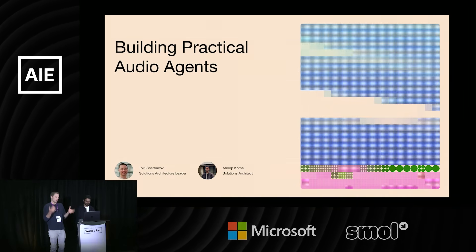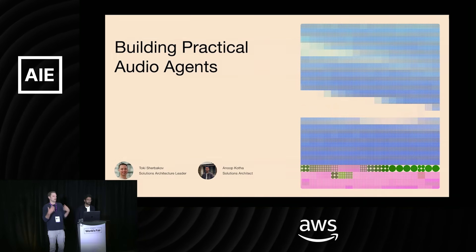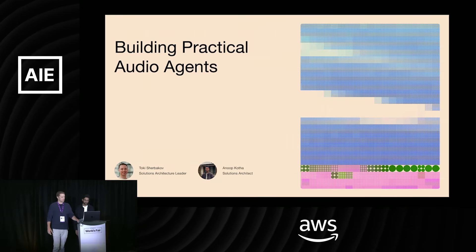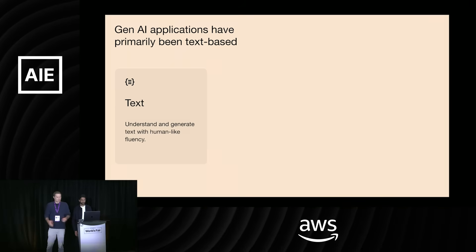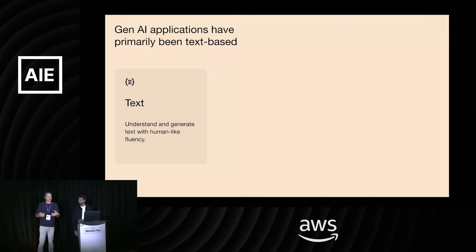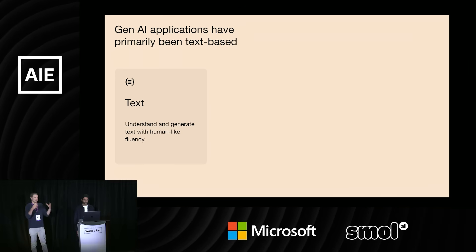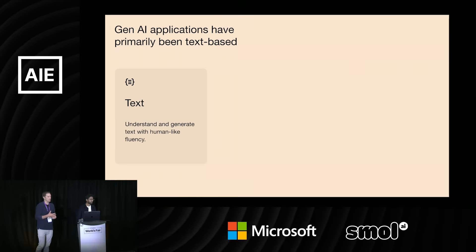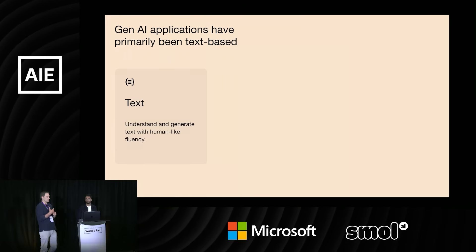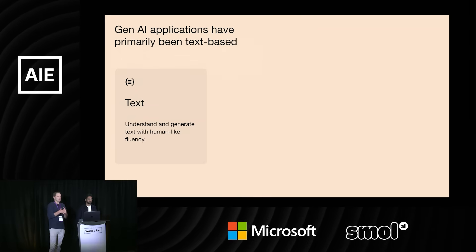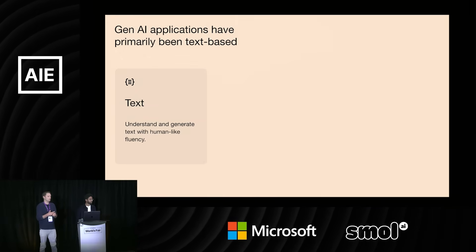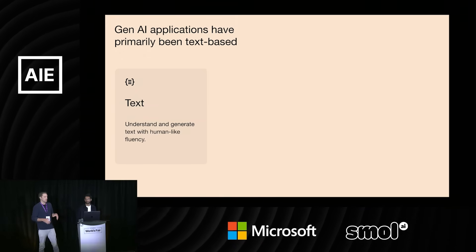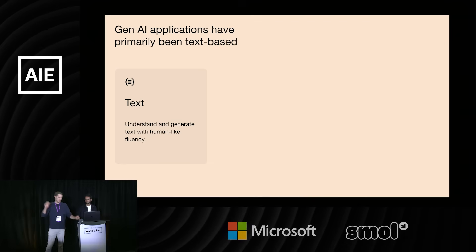So we'll talk a bit about some of the things we've learned, where audio models are today, and some of the patterns and best practices. Just to take a quick step back: Gen AI applications broadly to date have been very text-based — models that really deeply understand and generate text with very human-like fluency, and there are a lot of production applications built on text, and that continues to scale.